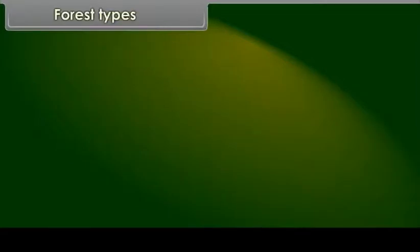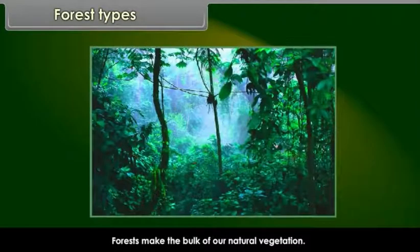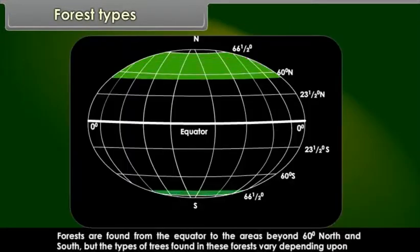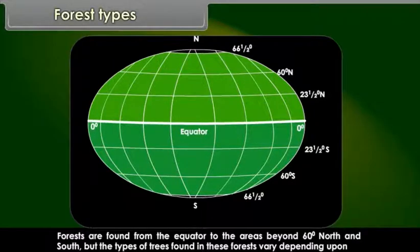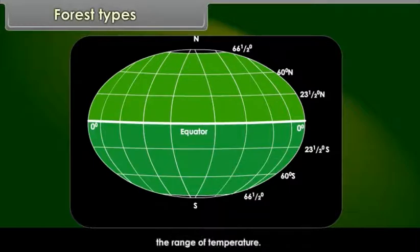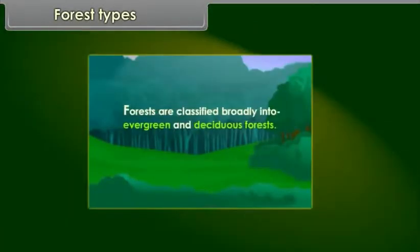Forest types: Forests make the bulk of natural vegetation. Forests are found from the equator to the areas beyond 60 degrees north and south. But the types of trees found in these forests vary depending upon the range of temperature. Forests are classified broadly into evergreen and deciduous forests.